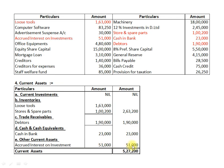By adding Inventories, Trade Receivables, Cash and Cash Equivalents, and Other Current Assets, we get Total Current Assets amounting to Rs.5,27,200. That's all, dear students. Thank you very much for watching this video lecture. Very soon we will meet with another example of the same chapter.